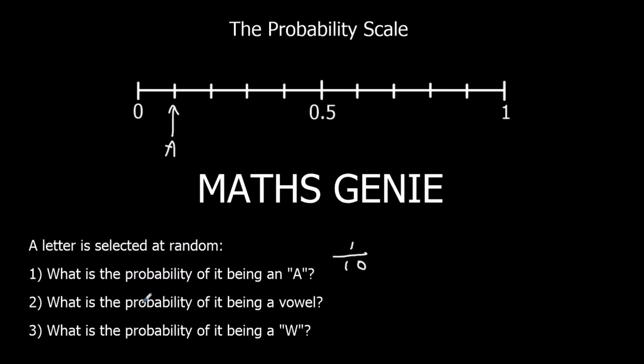What's the probability of getting a vowel? There's 1, 2, 3, 4. 4 vowels out of 10 letters, so it's 4 out of 10. 4 out of 10 is here. That's the probability of getting a vowel.